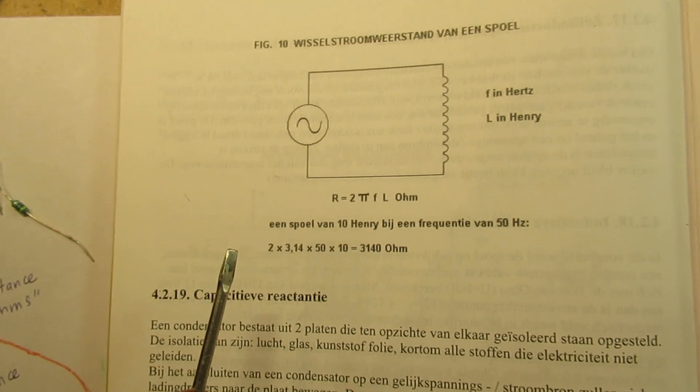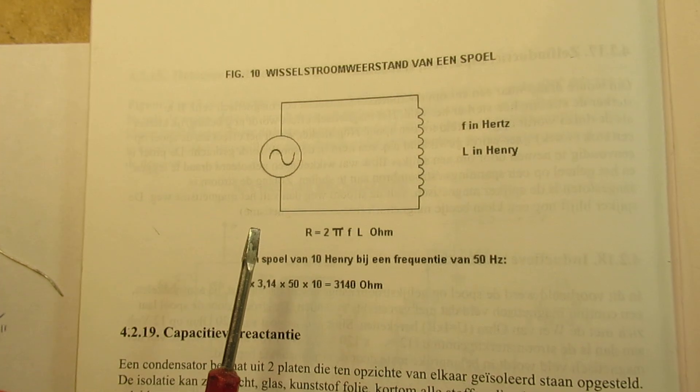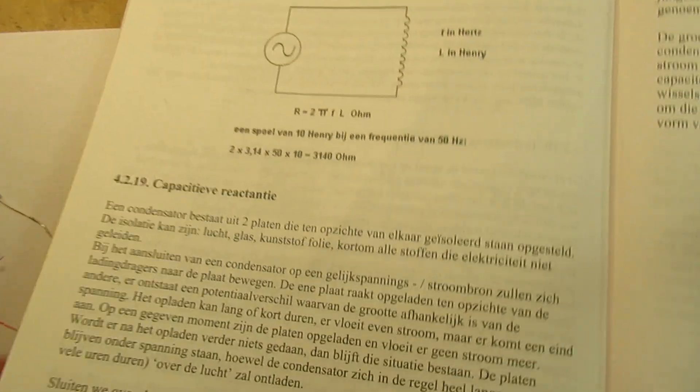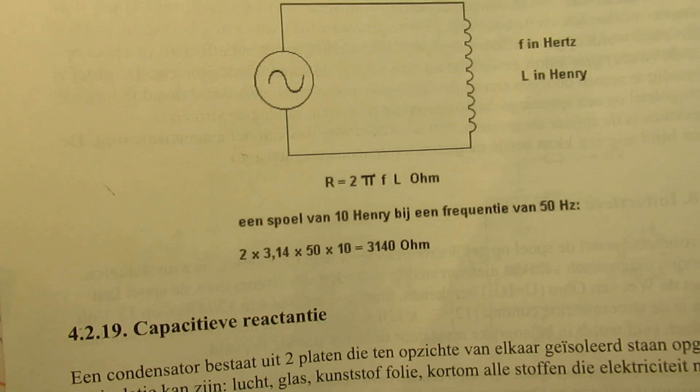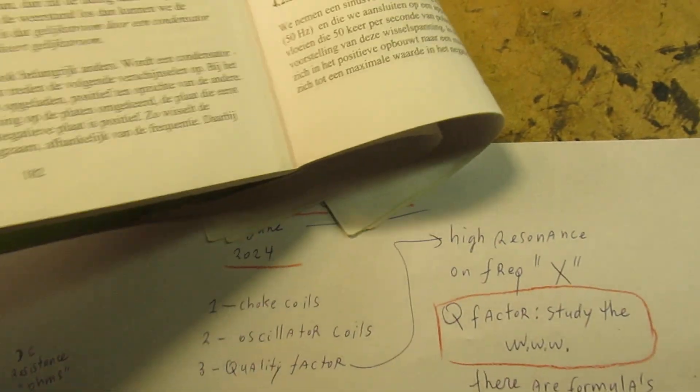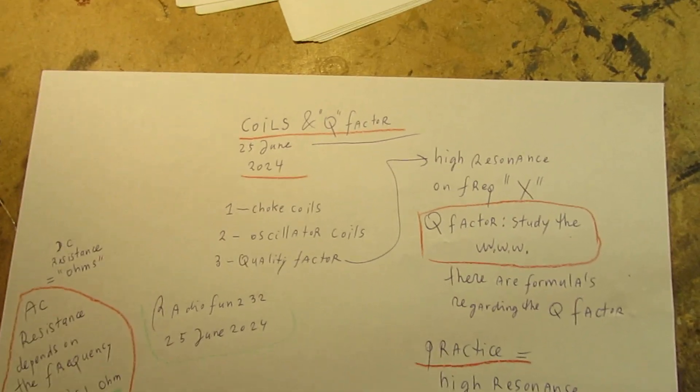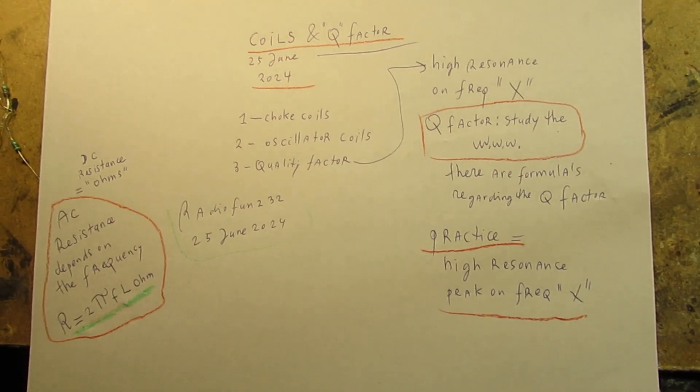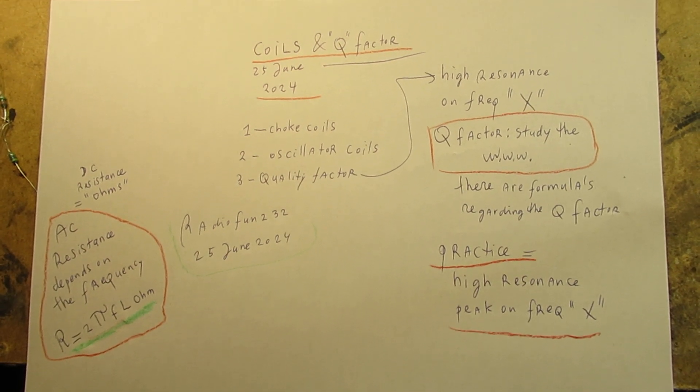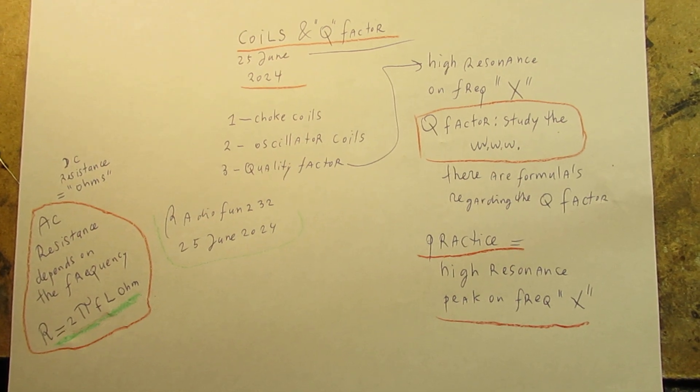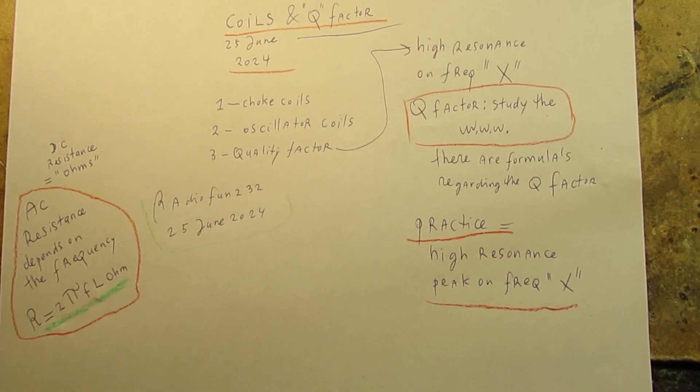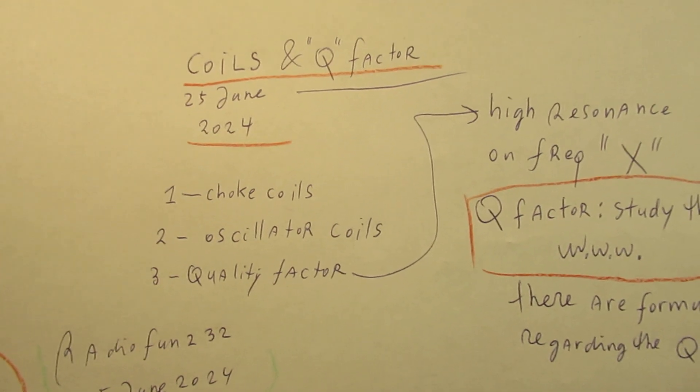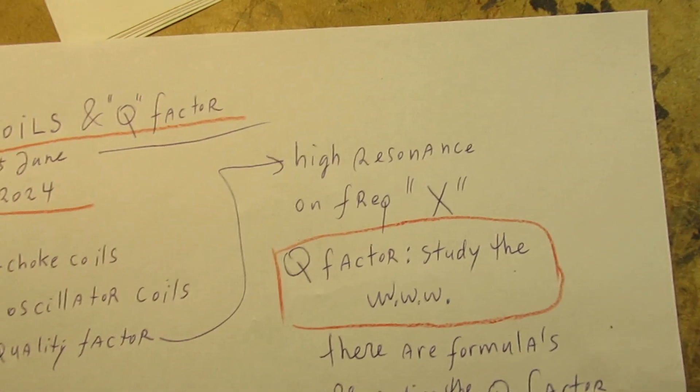And I mean, that only refers to the AC resistance. And that's the reason why you can use such a coil as a choke coil. Certain frequencies cannot pass through a choke coil. And that's the reason why you often see them in very old school radio circuits of the 1920s, when such a choke coil is in the anode lead. Anyway, this was all told. Choke coils, oscillator coils, quality factor. Thanks for watching.